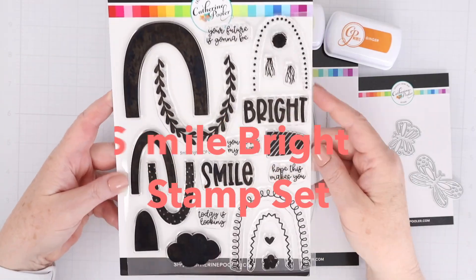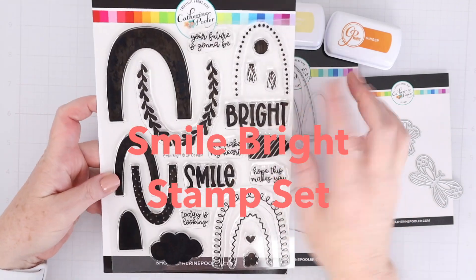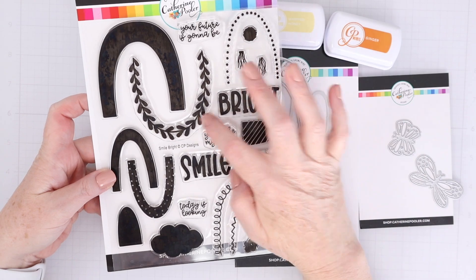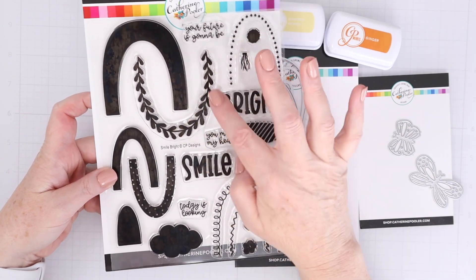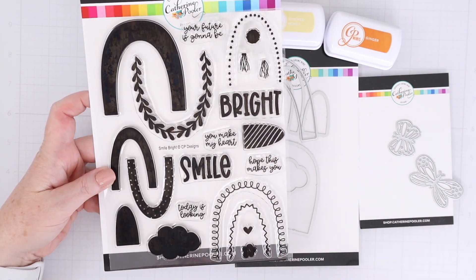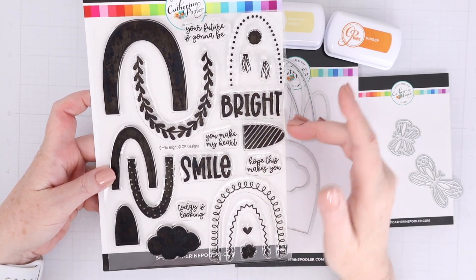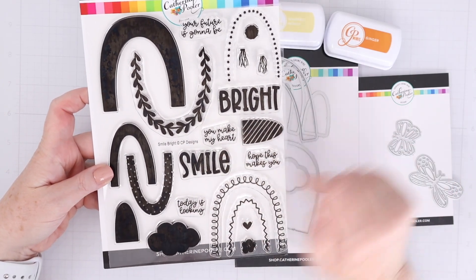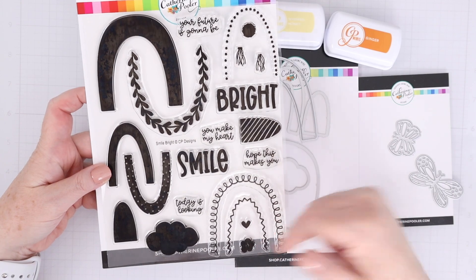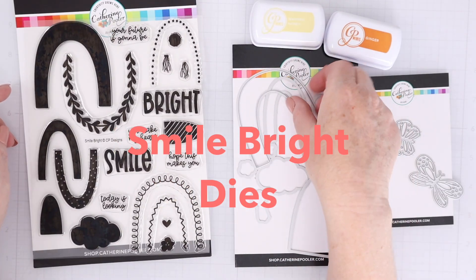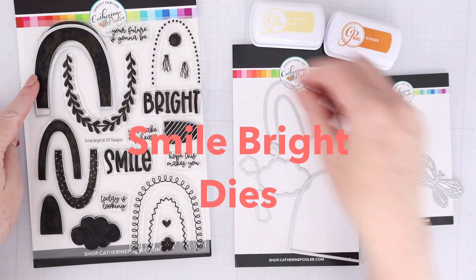First up is the Smile Bright stamp set. This is a very fun rainbow builder stamp set, so you can see the solid images of three different rainbow arcs. There are also patterned rainbow arcs you can use those as layers over the solid, or you can use them on their own. We'll do both in today's video. There's a cloud, a flower, a tassel, and lots of really sweet sentiments with the large ones being Smile and Bright.